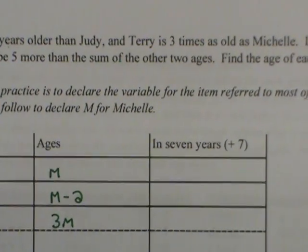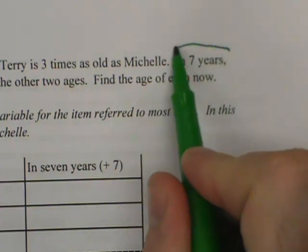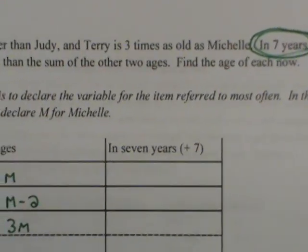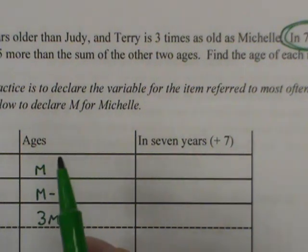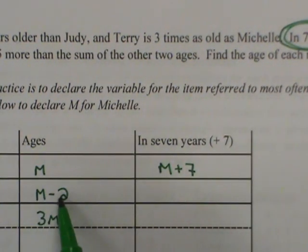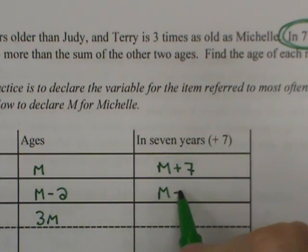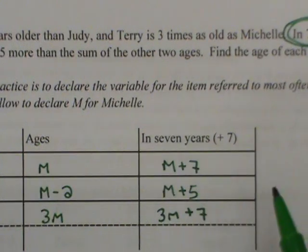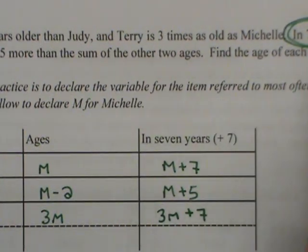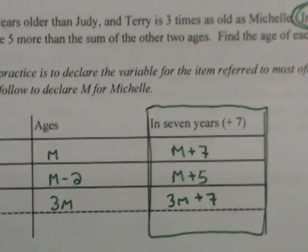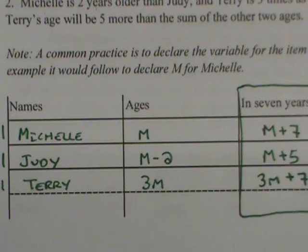As we've talked about the structure of these word problems, I look to the introductory phrase — it says "in seven years." In seven years is telling me that I should add seven to each of those expressions. I already have that typed up. Adding seven to each: Michelle is M plus seven, Judy is M minus two plus seven, which simplifies to M plus five, and Terry is three M plus seven. Once you get to this introductory clause, what follows is an equation in that tense, and you're not allowed to leave this column.